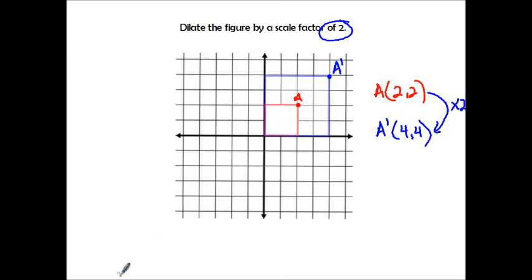So other coordinates on this square. We have B. We'll call that B right there. And it was at 0, 2. I take both x and y times the scaling factor of 2 to get B prime. And B prime will be 0 times 2, which is still 0, and 2 times 2, which is 4.